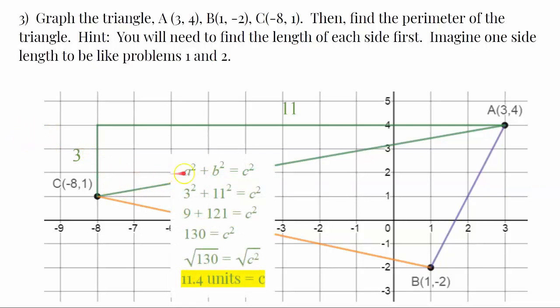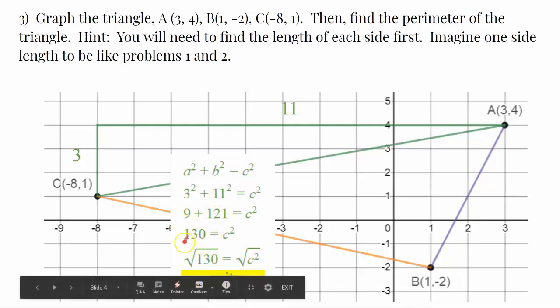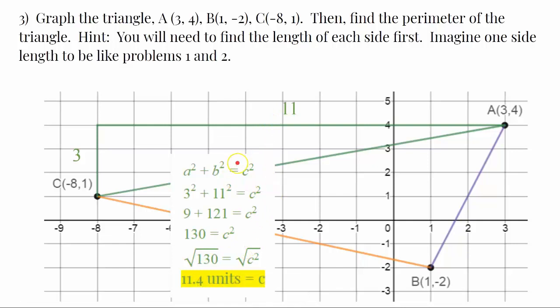So, here's the math that goes along with that using the Pythagorean theorem. Input the values of the legs. 3 squared is 9. 11 squared is 121. 9 plus 121 is 130, equals c squared. Take the square root of both sides. And when you do that, you get the answer of 11.4 units.